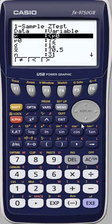I've already entered the data and we are going to do a left-tailed hypothesis test. Therefore I've chosen the less than sign using F2.